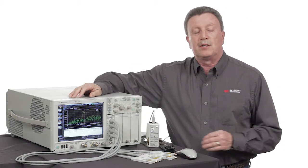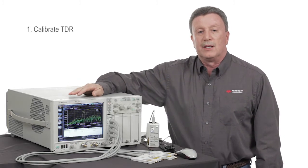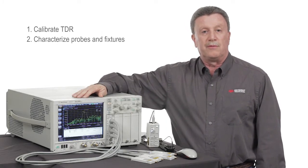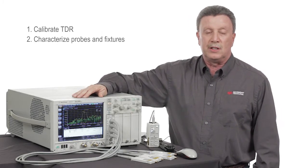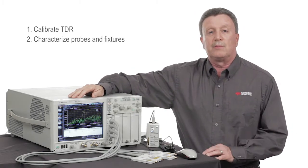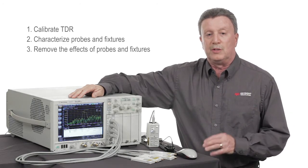And there's three steps to the process. The first step is to calibrate the TDR. The second step is to use the calibrated TDR to characterize the probes and fixtures that you need to use to connect to your DUT. And the last step is to measure the DUT plus the probes and fixtures and then remove the effects of those probes and fixtures through de-embedding.